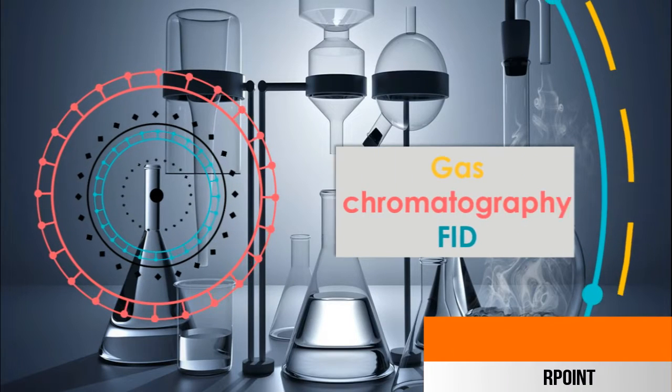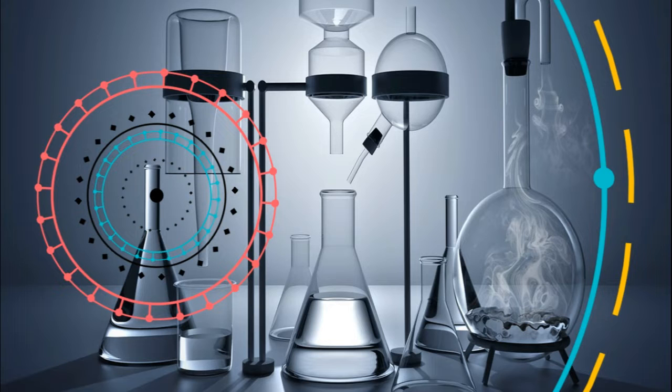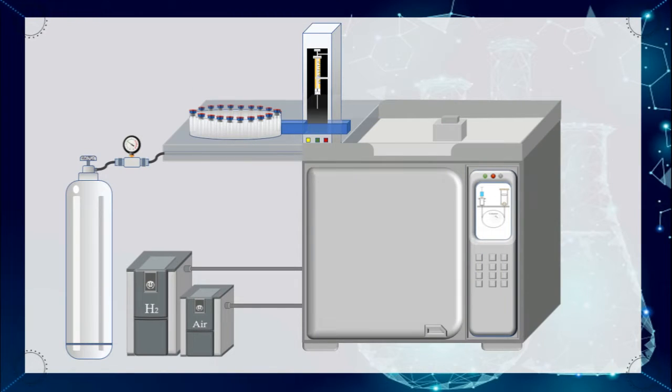Gas chromatography, GC, is a common type of chromatography used in analytical chemistry for separating and analyzing compounds that can be vaporized without decomposition.